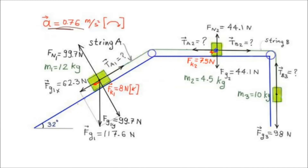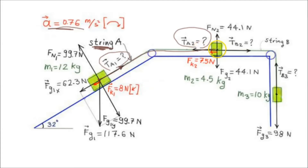Let's calculate first the tension in string A. Since the mass of string A is assumed to be zero and this string does not stretch, tension at every point will be the same. So this is TA1, the force exerted by string A on block 1, and TA2, the force exerted by string A on block 2. These two forces are equal in magnitude but opposite in direction along the string. So if we calculate TA1 or TA2, we can find the tension in string A.